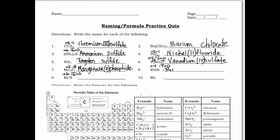Next: rubidium — leave a space — bromide. We check rubidium: it's a group one element with only one oxidation number, so we're done.